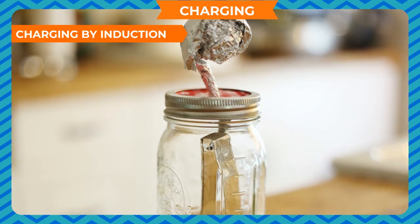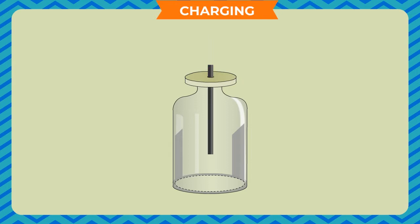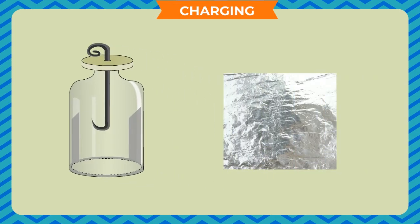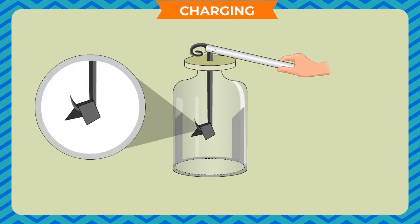You can make your own electroscope to detect if a body is charged or not. Take a glass bottle with a wide mouth. Cover it with a piece of cardboard. Make a hole in the cardboard and pass a metal wire through it. Turn both ends of the wire as shown in the figure. Cut strips of aluminium foil and hang them on the lower end of the metal wire. Touch a negatively charged ebonite rod to the upper end of the iron wire. We find that the aluminium strips repel each other, because the strips get charged negatively by conduction. This arrangement can be used to detect if an object is charged and to measure its charge by noting the amount of separation it produces in the two strips.